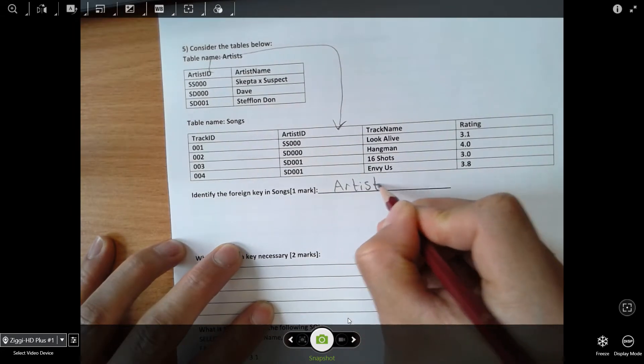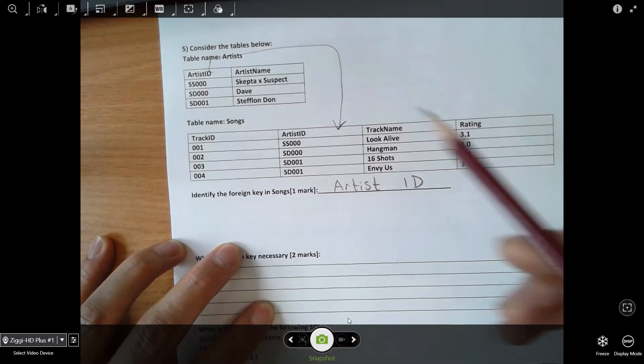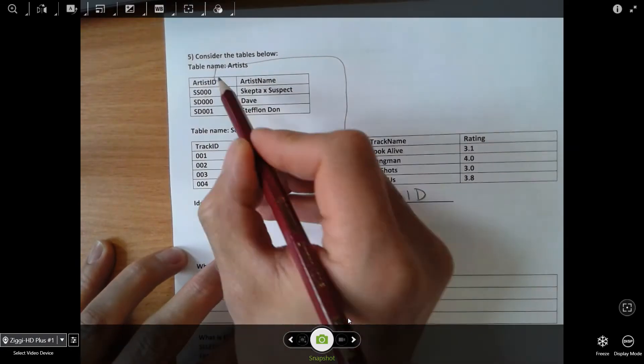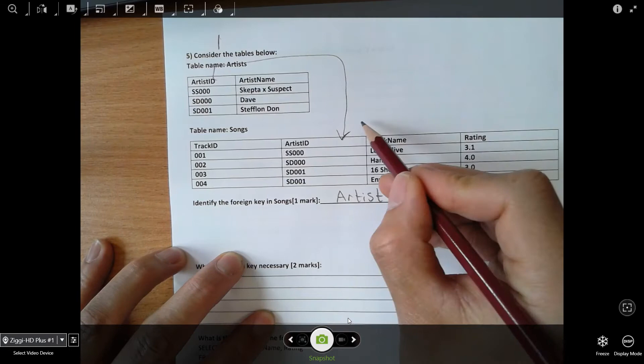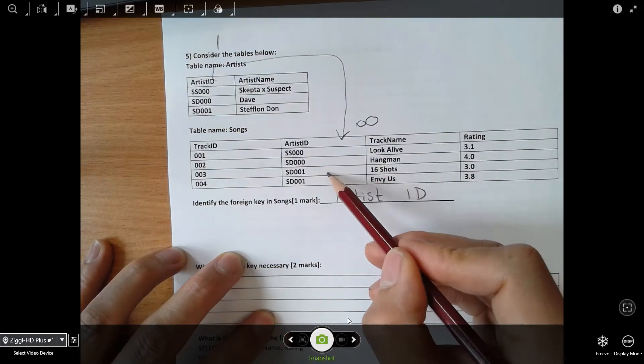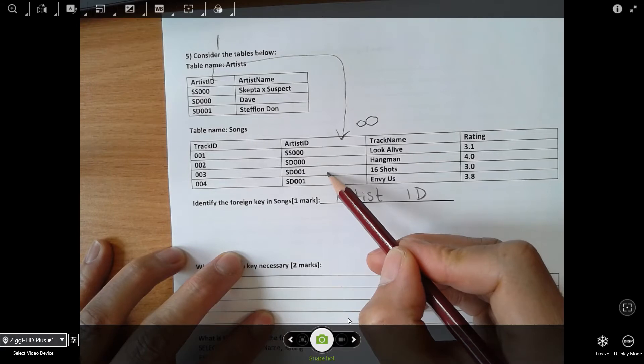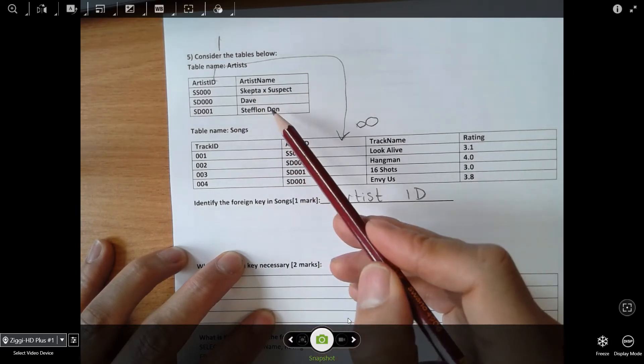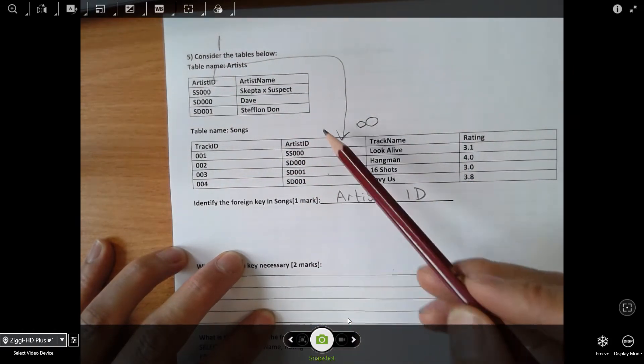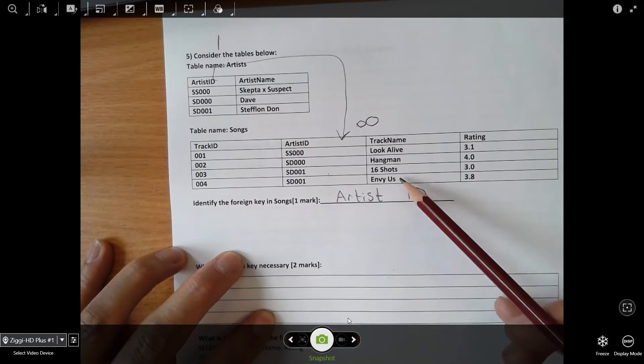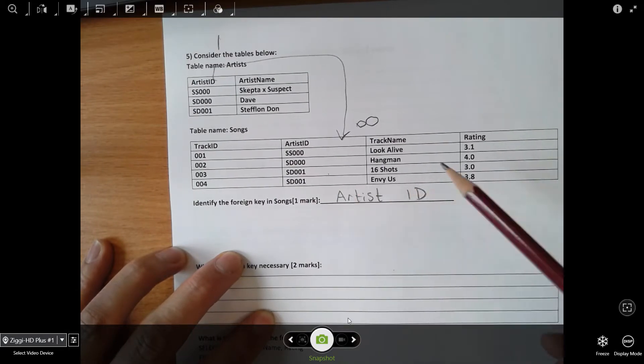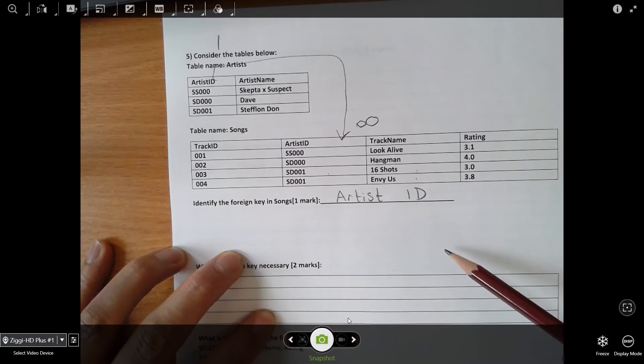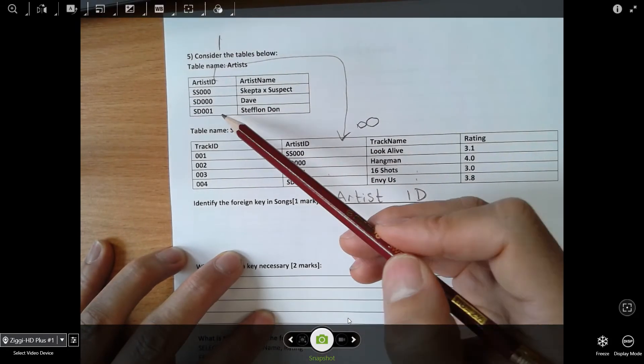The reason why that is a foreign key is because it's a primary key in another table and it creates a one-to-many relationship. You've got one here and many here in the songs table. Each artist can only appear once, whereas each artist can write several songs. For example, Steflon Don has two tracks here, 16 Shots and Envy Us. She could have loads of tracks in here, but she can only appear once in the artist table.